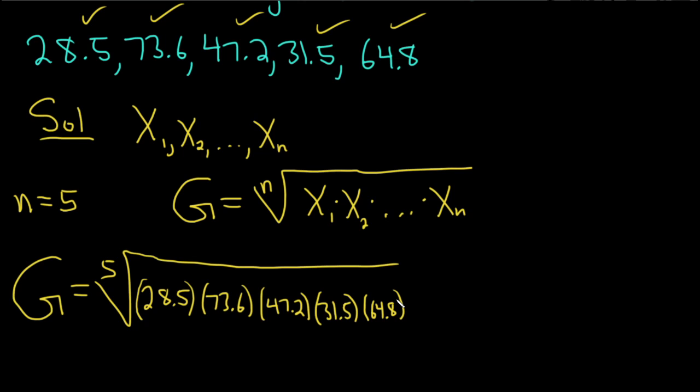So we have 28.5 times 73.6 times 47.2 times 31.5 times 64.8. Okay, and then we're taking the fifth root of that. So basically, in your calculator, what you could do is raise it to the one-fifth power, and that will give you the answer.